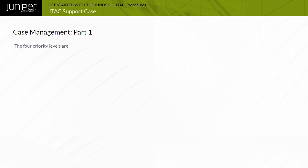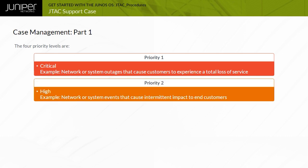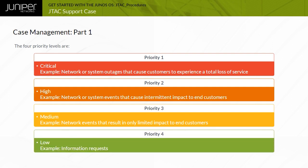There are four priority levels. Priority 1 is critical and indicates catastrophic impact to business operations. Examples include network or system outages that cause customers to experience a total loss of service. Priority 2 is high and indicates significant impact, such as intermittent impact to end customers. Priority 3 is medium and indicates limited impact on business operations. Priority 4 is low and indicates no impact on business operations.